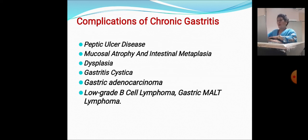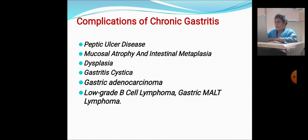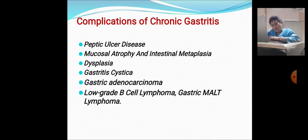Complications of chronic gastritis include: peptic ulcer disease, mucosal atrophy and intestinal metaplasia, dysplasia, gastric cystica profunda, gastric adenocarcinoma, low-grade B-cell lymphoma, and gastric MALT lymphoma.